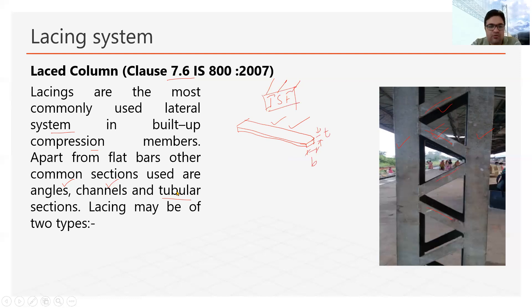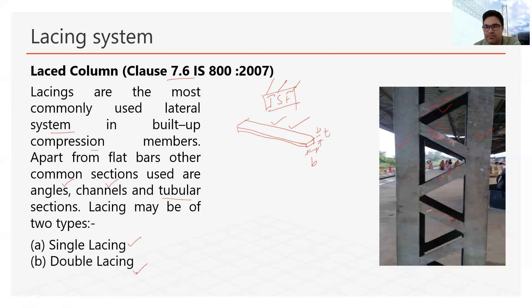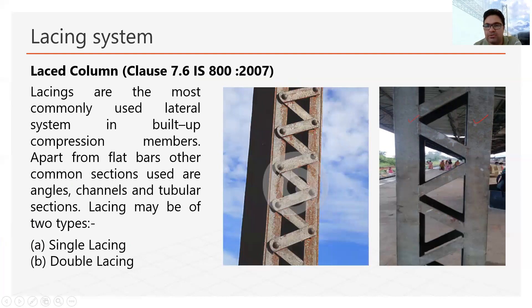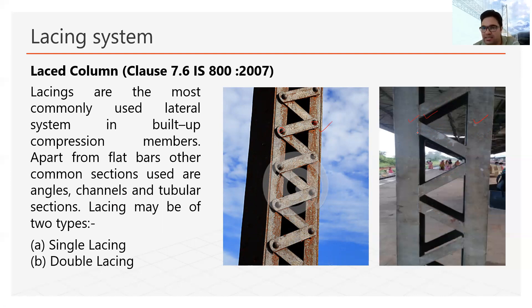Lacing bars are of two types: the first is called single lacing and the second is called double lacing. In one photo of the lacing system, you can see a lacing bar connected between the main components. Sometimes lacing bars are arranged so they overlap each other, and sometimes they do not overlap. In both cases, the design of the connection is different — we will discuss that in a later slide.